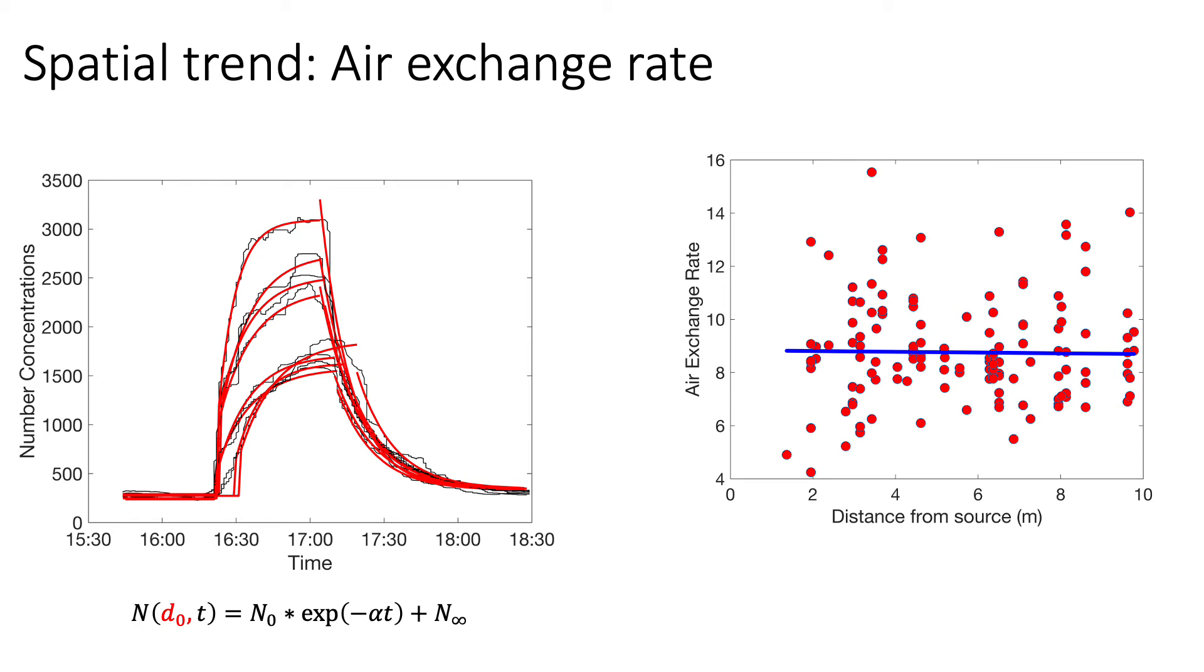When we look at this room, what we find is that the sensors distributed in this room don't all have the same profile. They all have different profiles. We then fit individual curves to it and compare the air exchange rate just during the up climb or down climb.